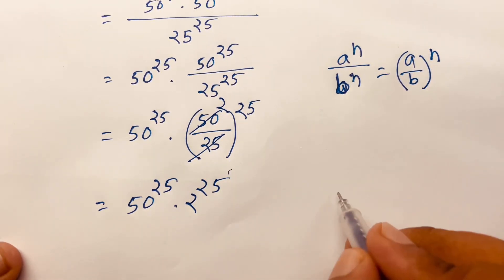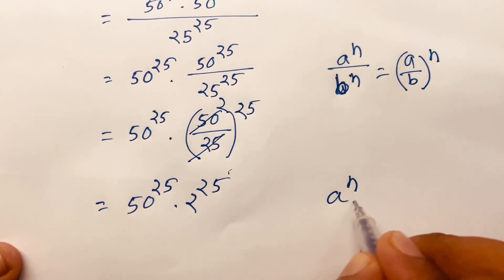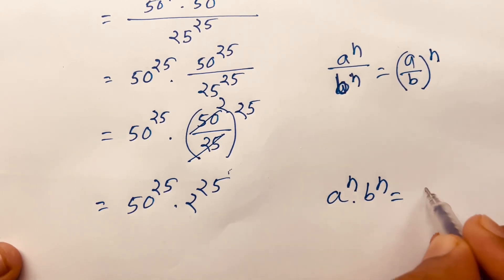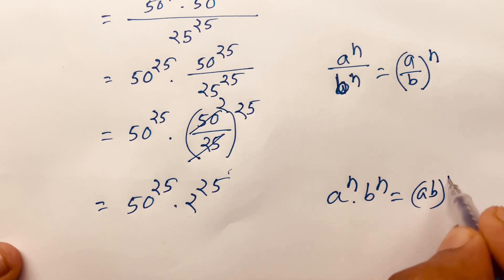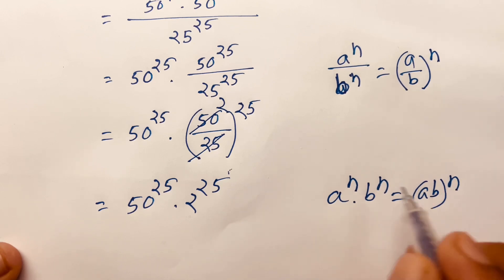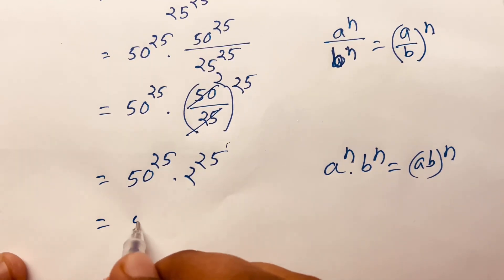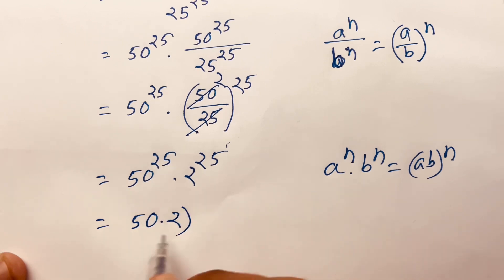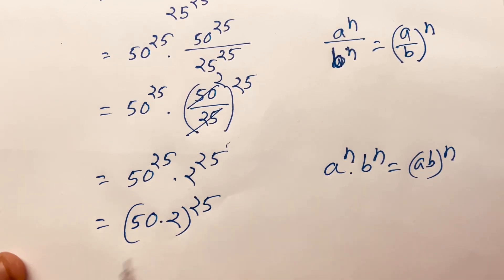We know that a to the power n times b to the power n equals (a times b) to the power n, since the exponents are the same. So I can write (50 times 2) to the power 25, which gives 100 to the power 25.